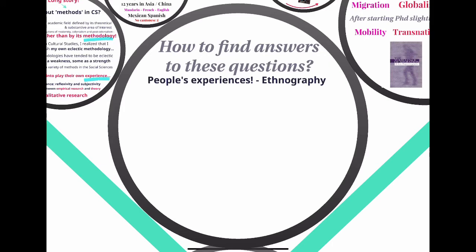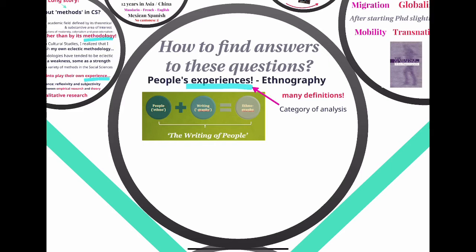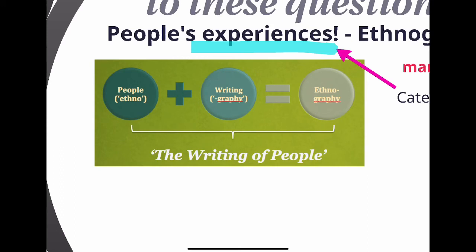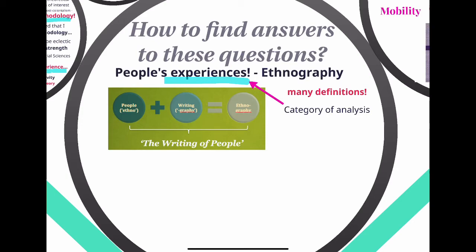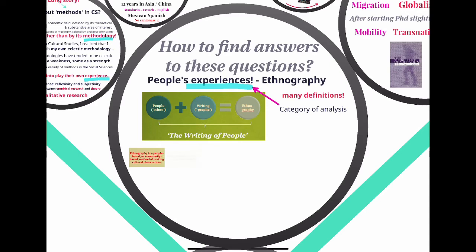How do we deal with people's experiences? This is why we use ethnography. There are many different definitions of ethnography. In relation to ethnography, we think of experience — that very difficult thing to define — as a category of analysis, a unit of analysis. This is one of the advantages that ethnography has: it focuses on experience and brings experience to the center. Ethnography means 'the writing of people' — ethno means people, graphy means writing. It's the portrayal of communities and individuals.